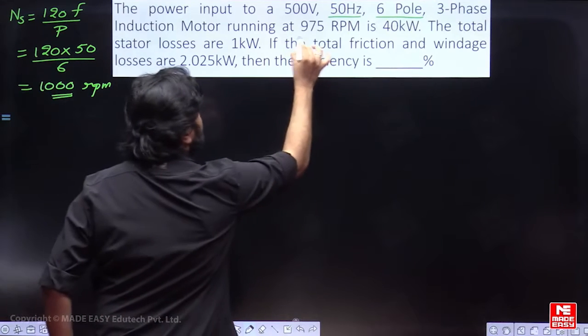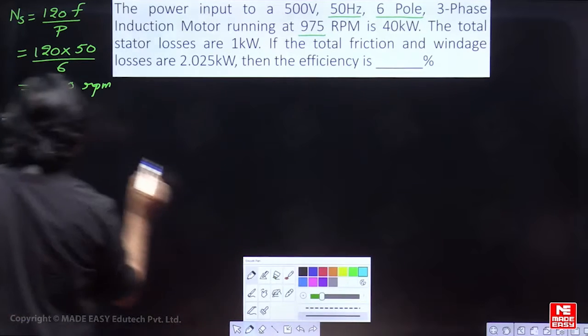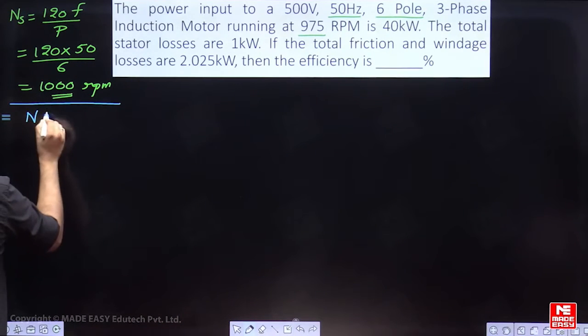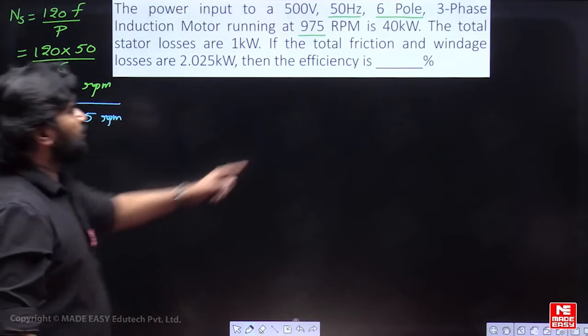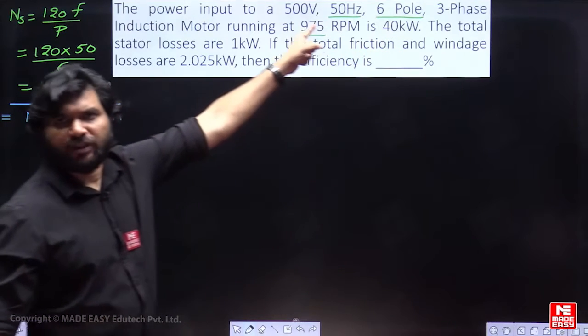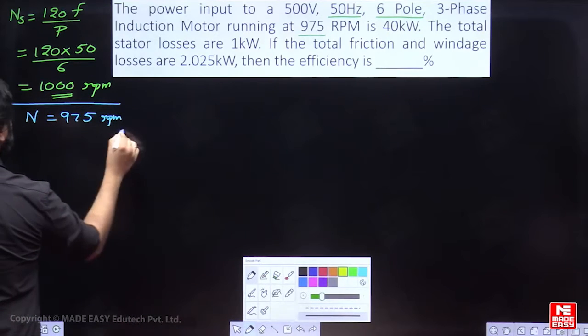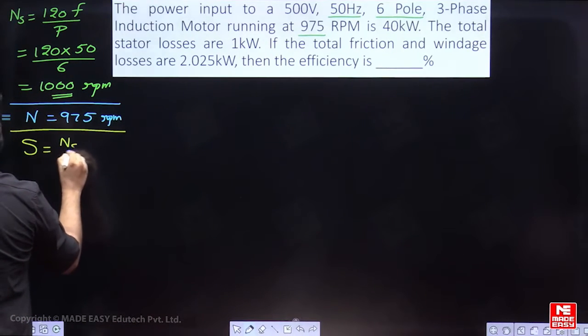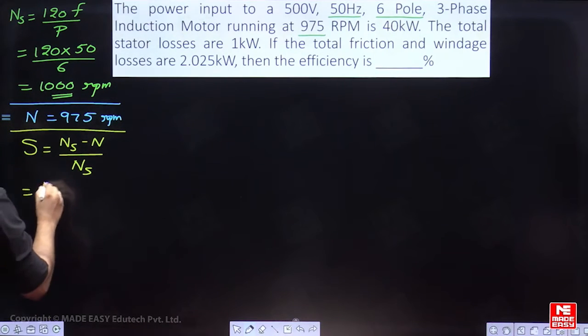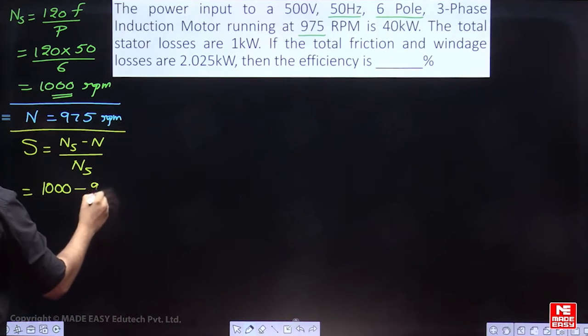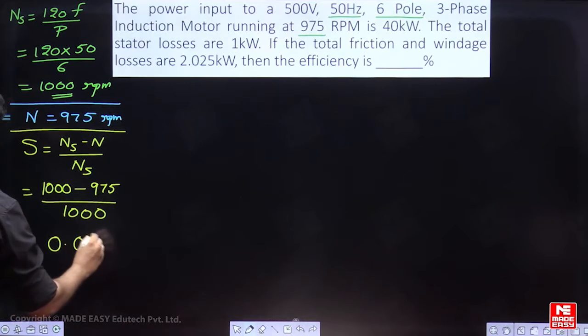It is mentioned motor is running at 975 rpm. N is 975 rpm for this input, for that particular input. So, let us calculate slip. Slip is Ns minus N by Ns that is 1000 minus 975 by 1000 that is 0.025.